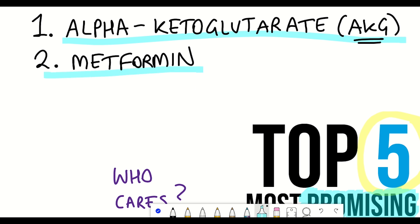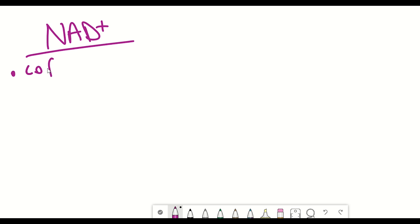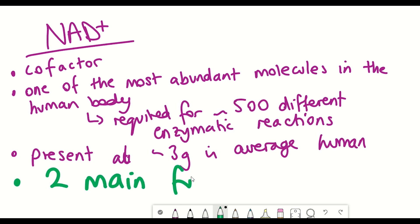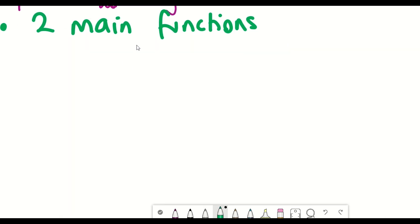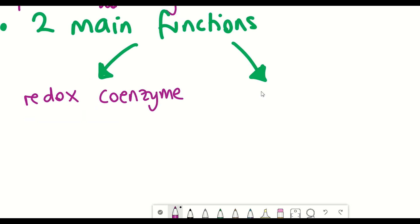Now next up are nicotinamide adenine dinucleotide precursors. This includes the precursors nicotinamide mononucleotide, NMN, and nicotinamide riboside, as well as niacin. So these are precursors for NAD+, and NAD+ is a really important cofactor within our cells that has two major functions. Firstly, acting as a redox coenzyme and alternating between its oxidized and reduced state, and secondly, as a substrate for NAD+ dependent enzymes, including sirtuins, which we'll also maybe be coming back to later.